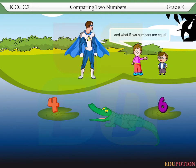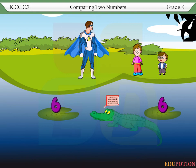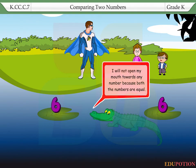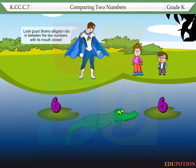And what if two numbers are equal? Good question, Jack. Brainy Alligator, please come and show us. I will not open my mouth towards any number, because both the numbers are equal. Look, guys, Brainy Alligator sits in between the two numbers with its mouth closed.